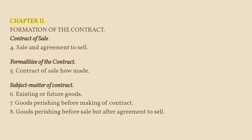Chapter II — Formation of the Contract. Contract of Sale. Section 4: Sale and Agreement to Sell. Formalities of the Contract. Section 5: Contract of Sale How Made. Subject Matter of Contract.